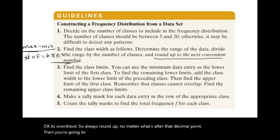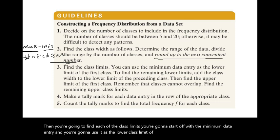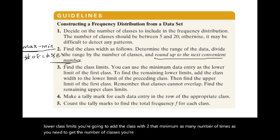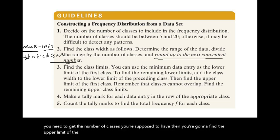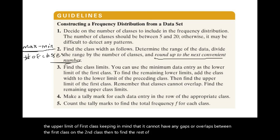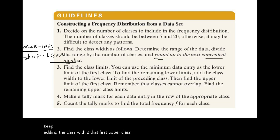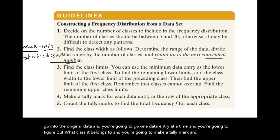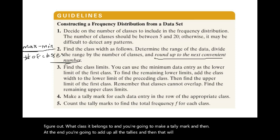Next, find the class limits. Start with the minimum data entry as the lower class limit of the first class. Add the class width repeatedly to get the remaining lower class limits. Then find the upper limit of the first class so there are no gaps or overlaps with the second class, and keep adding the class width for the remaining upper limits. Finally, go through the data one entry at a time, make tally marks, and count up the frequencies.